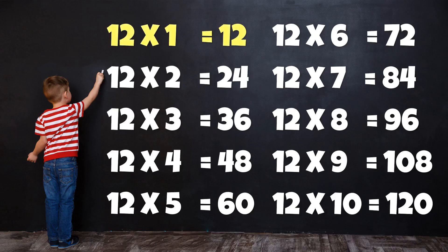Table of 12. 12 1's are 12. 12 2's are 24. 12 3's are 36. 12 4's are 48. 12 5's are 60. 12 6's are 72. 12 7's are 84. 12 8's are 96. 12 9's are 108. 12 10's are 120.